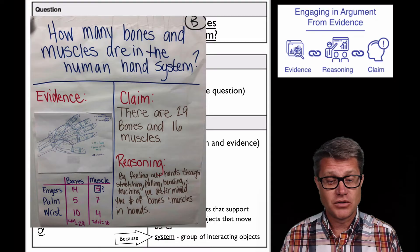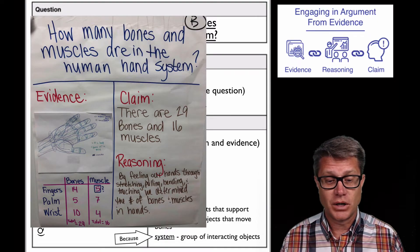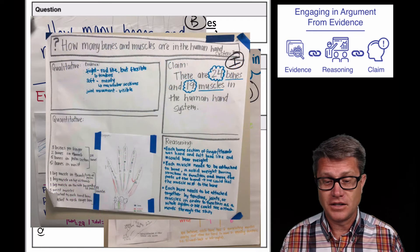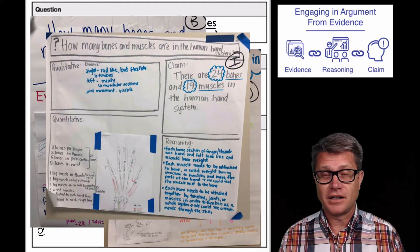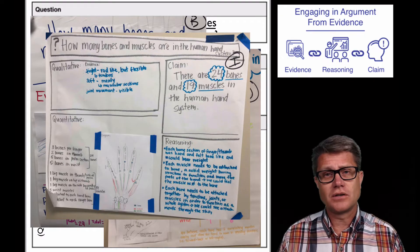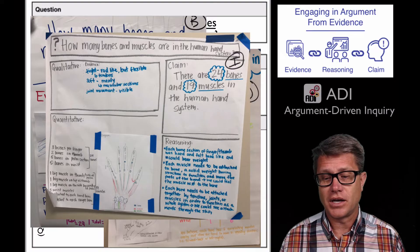If we look at some of the posters, these people think there are 29 bones and 16 muscles in the hand. Whereas these people think it's 44 and 48. And these people think it's 24 and 19. Now we can get these posters up on the wall. We can look at how they gathered the evidence and we can start to improve the argumentation that we have.